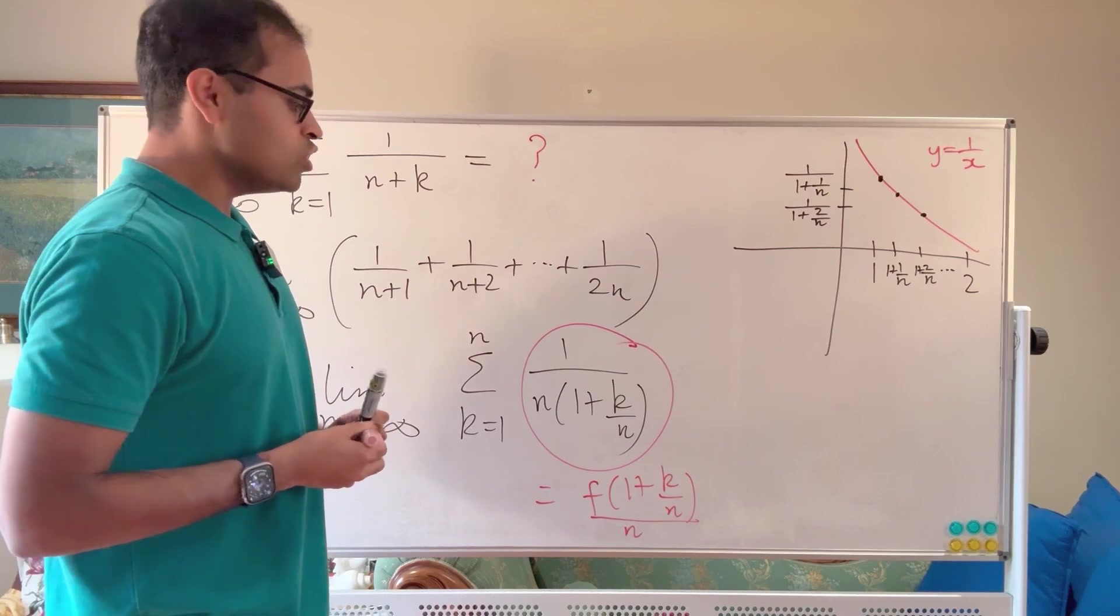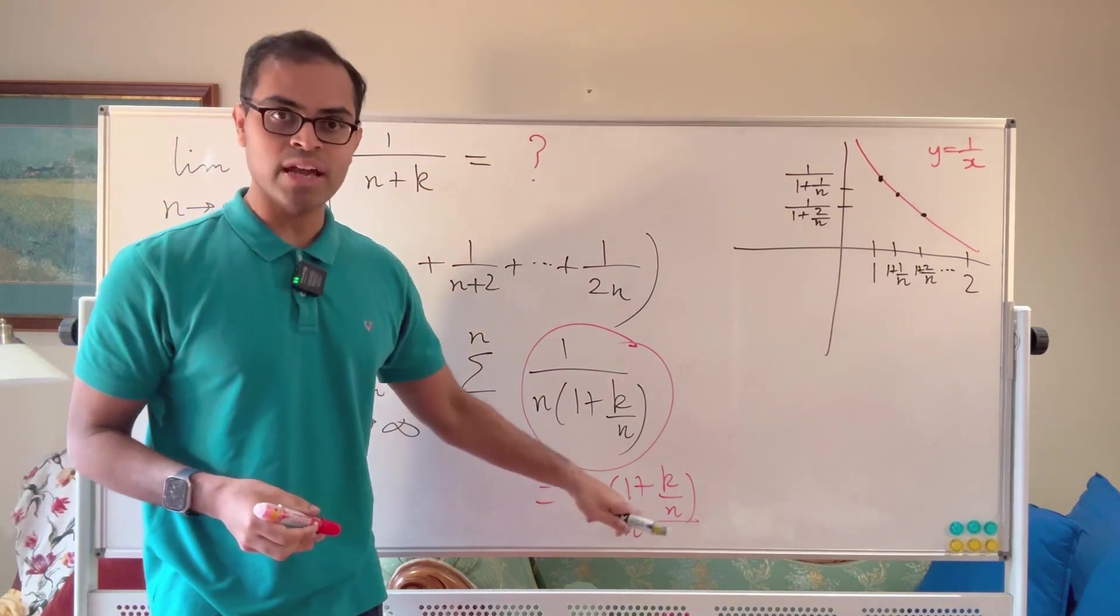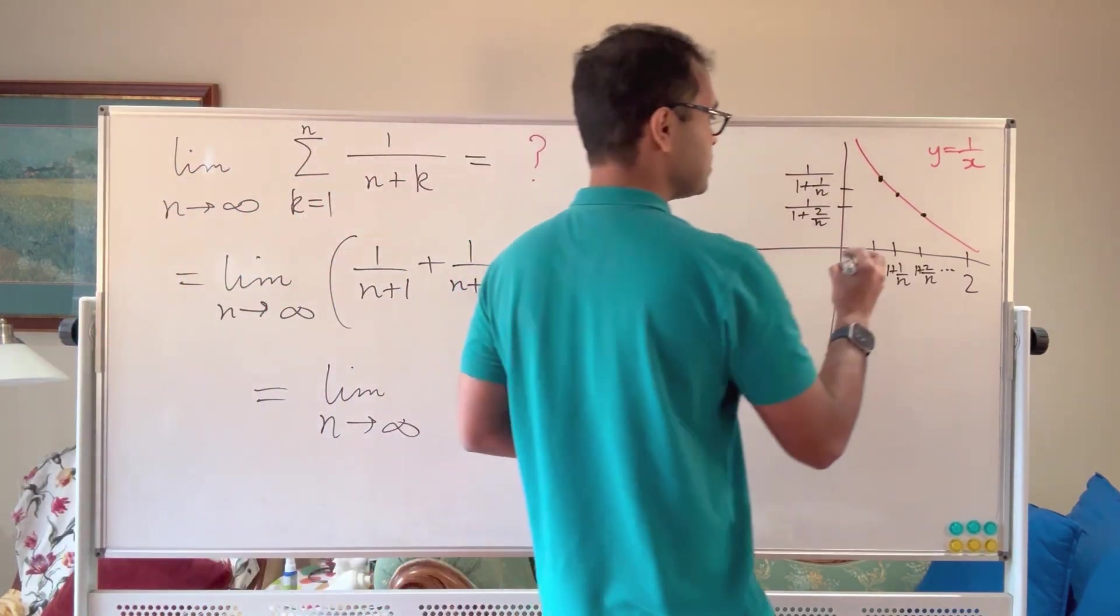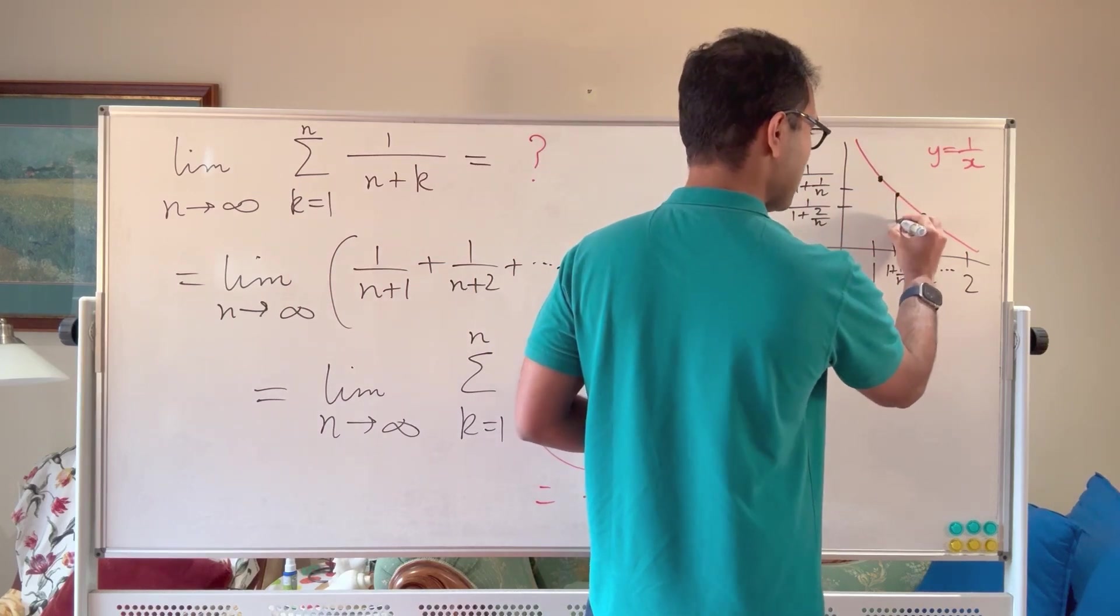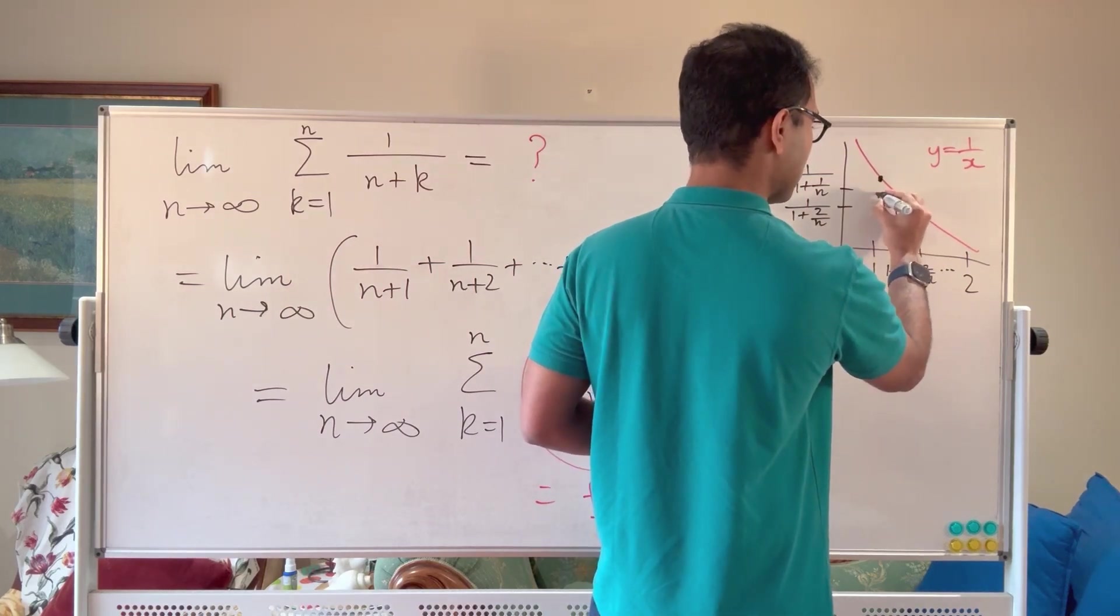Now getting back to this, notice that this expression 1 over n times f of 1 plus k over n, well look at this, this is going to be the area of a rectangle. So I can draw this rectangle here.